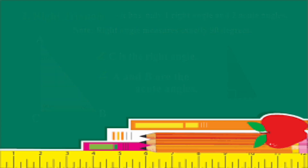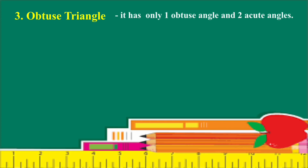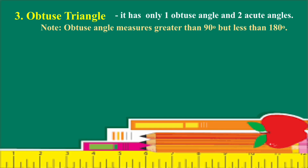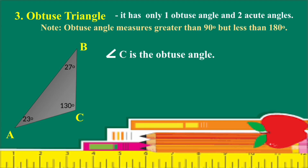The last one is the Obtuse Triangle — a triangle with one obtuse angle and two acute angles. Note that an obtuse angle measures greater than 90 degrees but less than 180 degrees. For example, triangle ABC where angle A is 23 degrees, angle B is 27 degrees, and angle C is 130 degrees. Angle C is the obtuse angle, and angles A and B are acute angles.